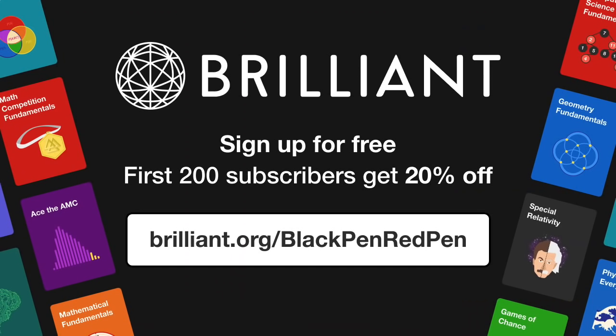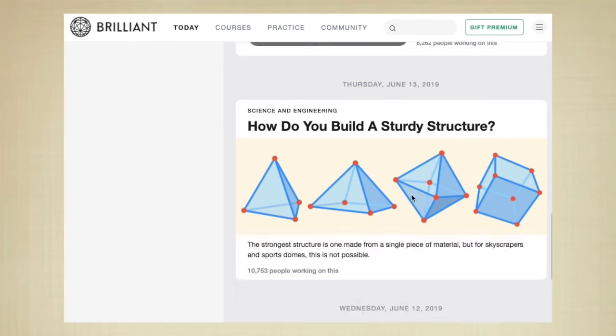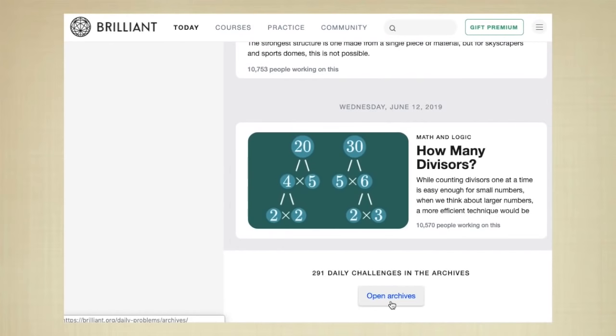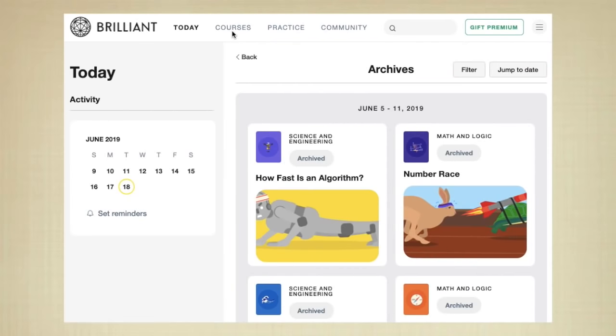So they have tons of questions for you guys to do right here that will occupy your day and make your day productive. And if you guys want more, you can use the link brilliant.org/blackpenredpen because this way, you guys can get a 20% off discount to their annual premium subscription. And that way, you can get access to all of their archive questions, and you can also get their courses.